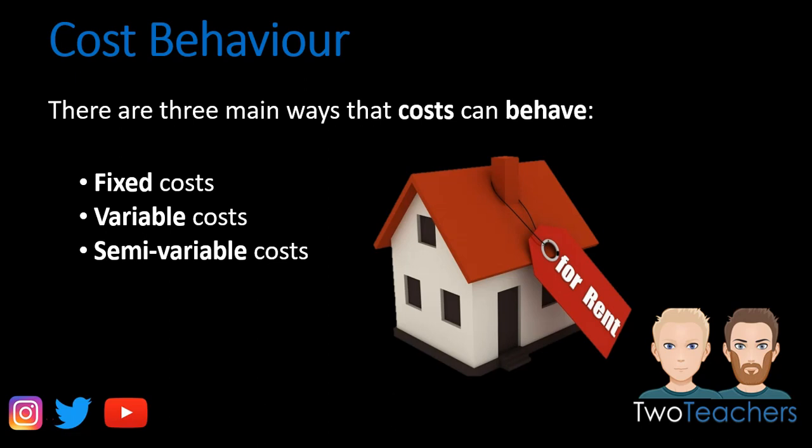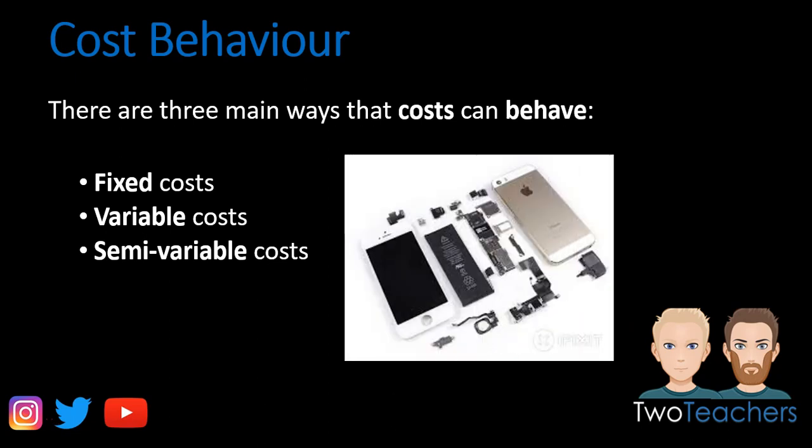A fixed cost is one where it doesn't matter how much or how little we produce — we still have to pay it. Producing the iPhone itself, all of the components including the plastic, glass, metal, camera, infrared sensors, and home button are all variable costs, because we know exactly how much they cost and every time we produce one that cost goes up by exactly the same amount. If all the parts came to £150 in total, then every time we produce a phone it will cost us another £150.